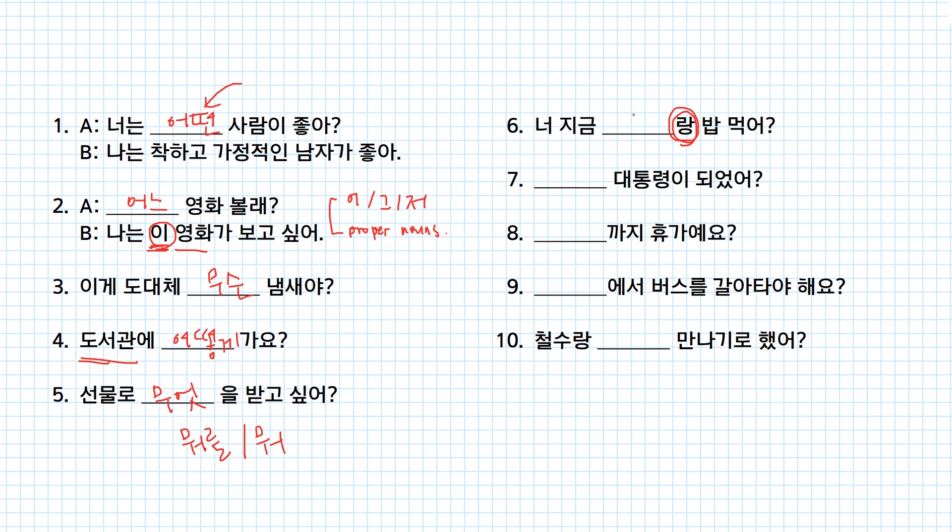Number six. 누구랑 밥 먹어요? With whom are you eating the meal? With whom? 누구랑. And 누가 대통령이 되었어? Who became a president? Who as a subject? Therefore, 누가. 언제까지 대통령이 되었어? Till when do you have a vacation? 언제까지? Till when? 어디에서 버스를 갈아타요? Where should I transfer the bus? Where? 어디에서? Place particle is used.